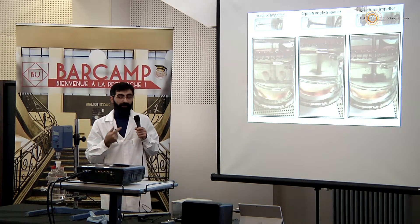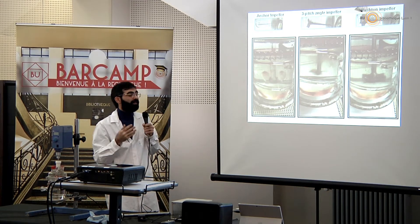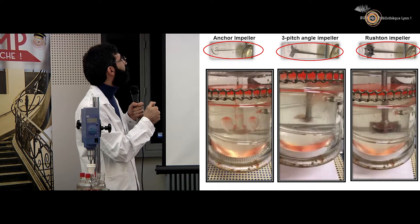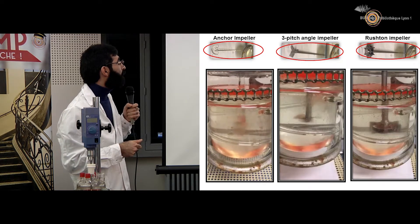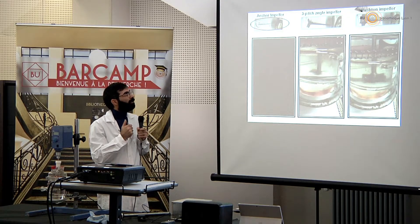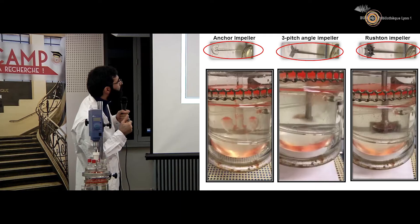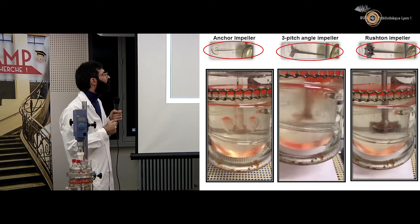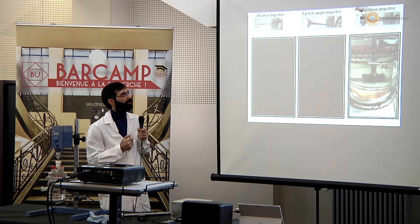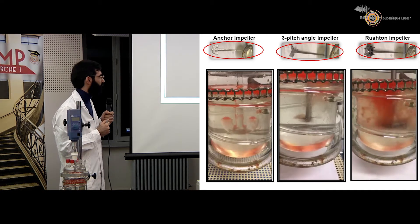The other thing to be important in our project is the operating conditions. One of them is the type of our impeller which will make the double emulsions. If we just take a look at them, for example, for the anchor impeller we can see it is the slowest one in making our emulsion. Then we can see the three-blade angle impeller, it is a bit faster. And after this, the Rushton impeller, which is the fastest one for us.